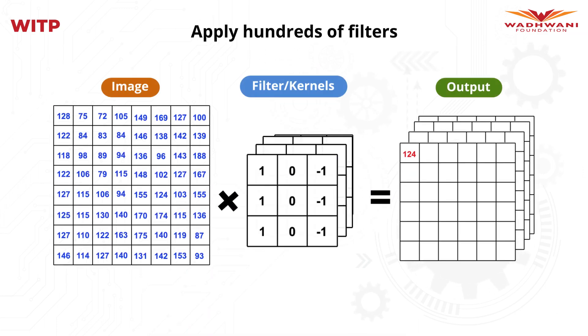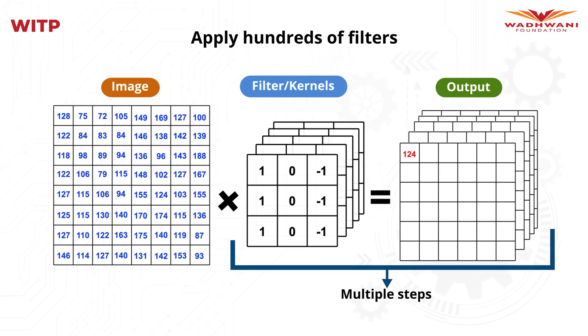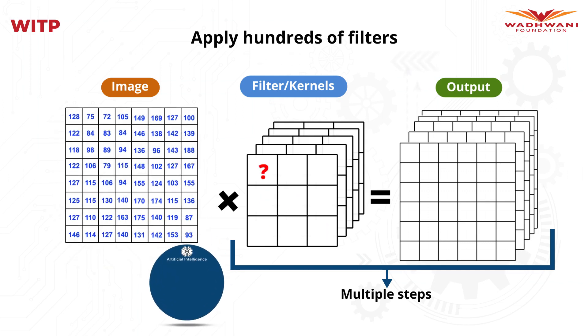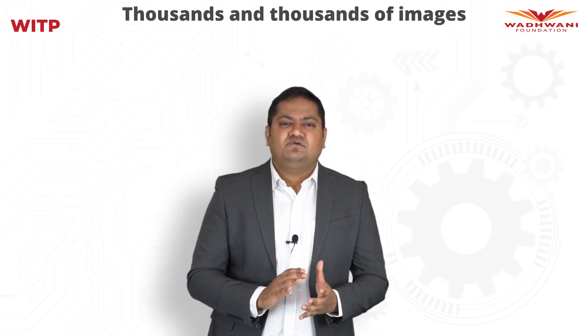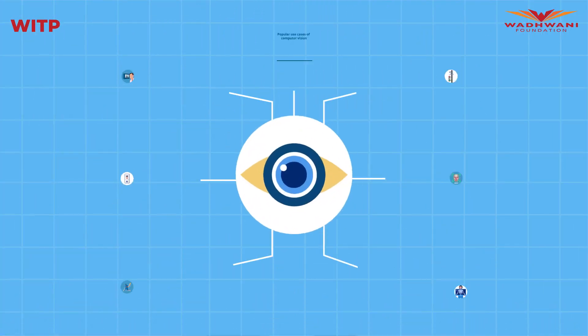The state-of-the-art computer vision algorithms use the same base logic, but with three key differences. First, they use hundreds of different filters. Second, they apply these hundreds of filters in many steps repeatedly. Third, they let the architecture learn the right values in these filters using machine learning. The computer vision algorithms need to train on thousands and thousands of images before they can give something of value.